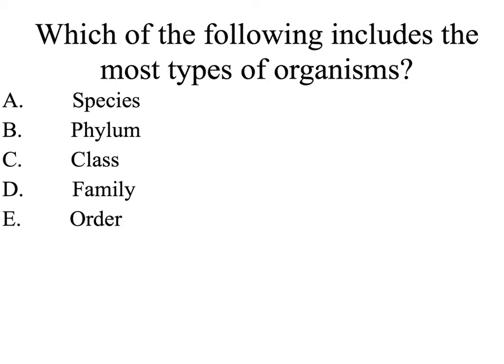Let's practice for a minute. Which of the following is the most specific of our categories? The genus is the most specific — it is the smallest category towards the bottom of our classification system. Here's another practice question: which of the following includes the most types of organisms? The phylum is closest to the top of our classification system and therefore is the most inclusive, containing the most types of organisms.